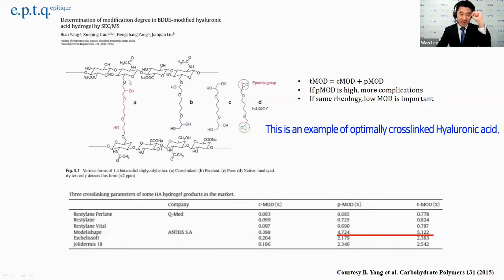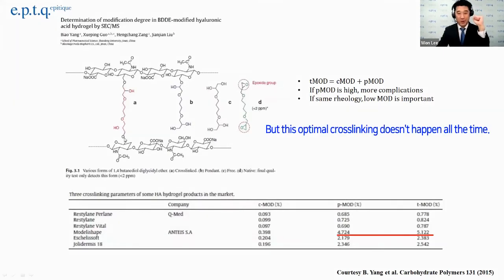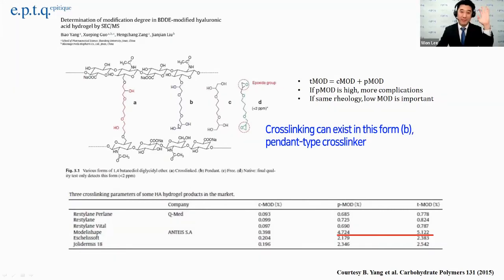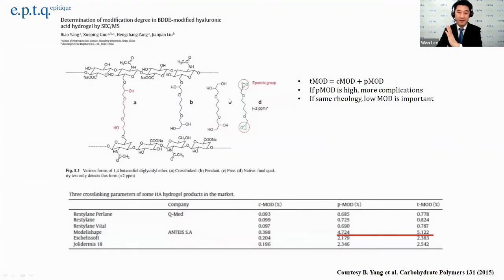So this is a proper HA filler, but the cross-linker does not exist only one way. It can exist in a pendant type form, or it can have a free type form, and also a native type form.